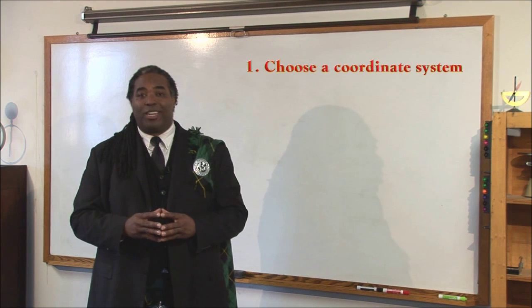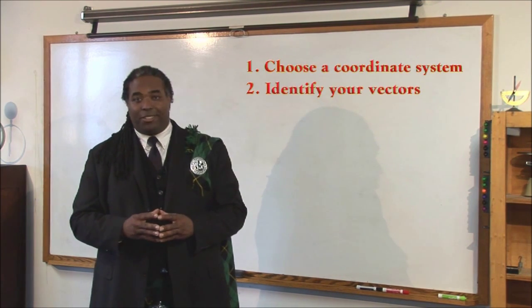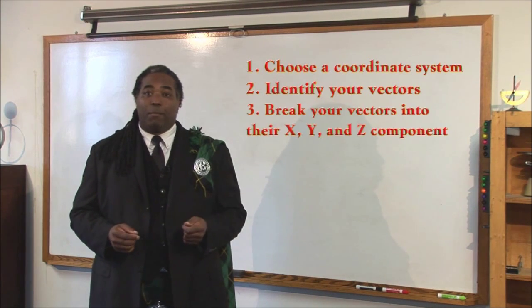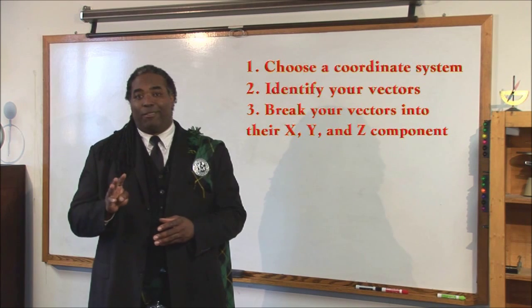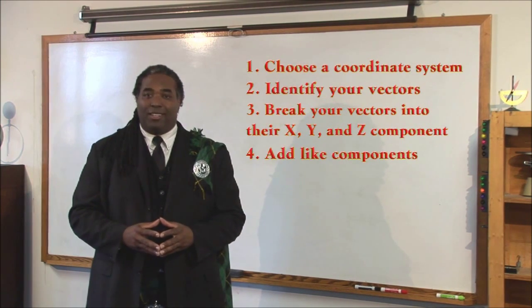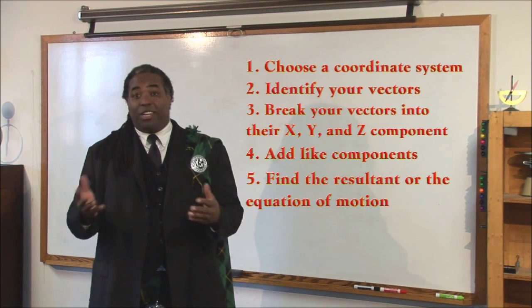Step one, choose a coordinate system. Step two, identify your vectors. Step three, break your vectors into their x, y, and z component. Step four, add like components. Step five, find the resultant or the equation of motion.